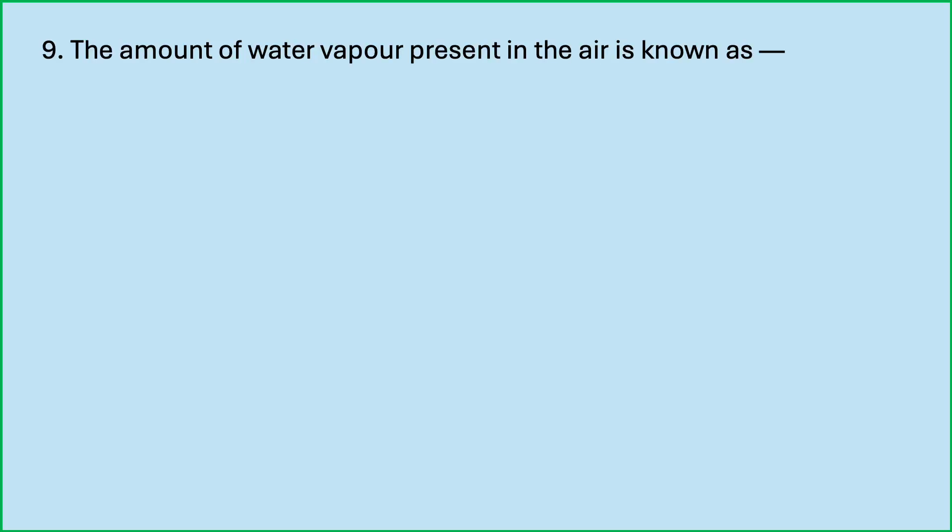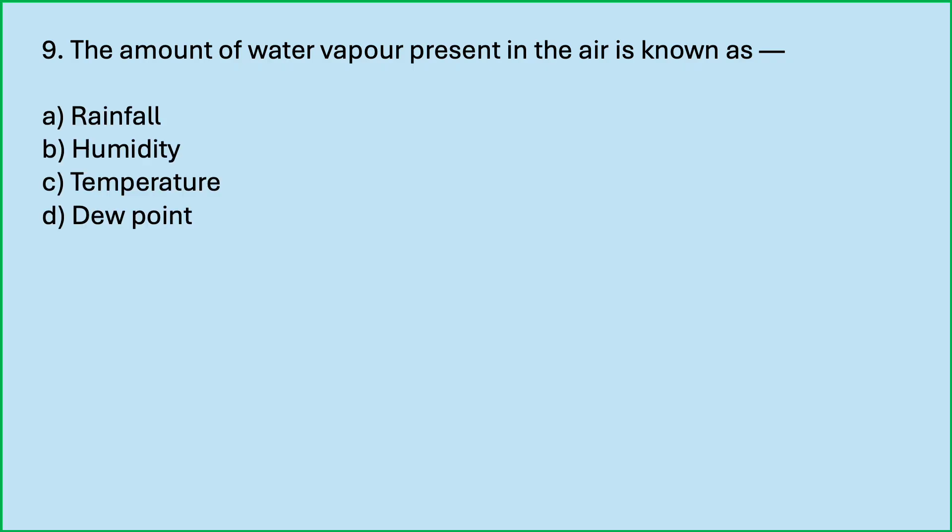The amount of water vapour present in the air is known as — options are: rainfall, humidity, temperature, dew point. Which is the correct answer? Humidity. The amount of water vapour present in the air is called humidity.